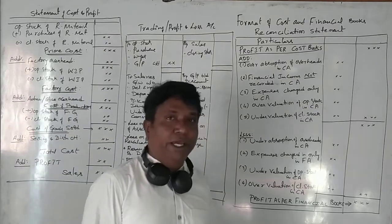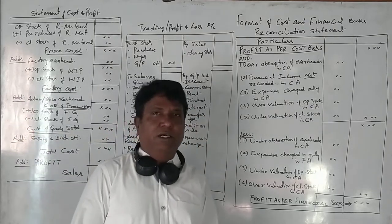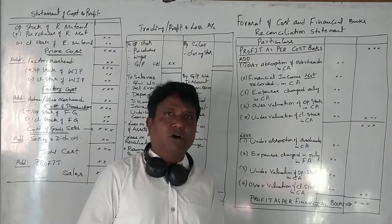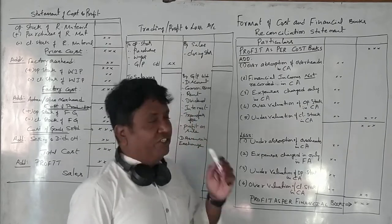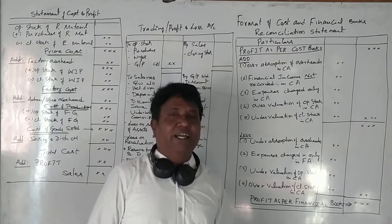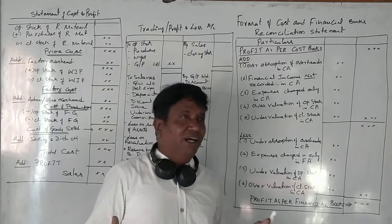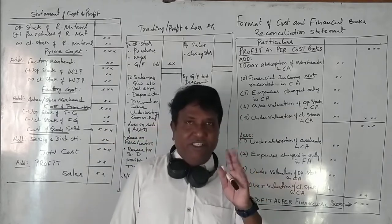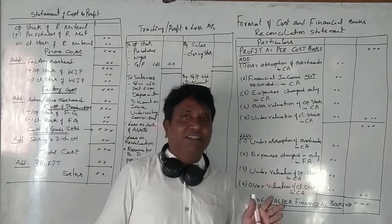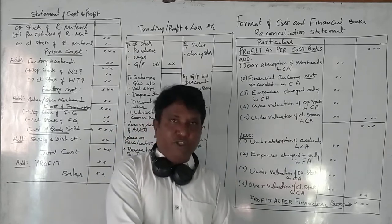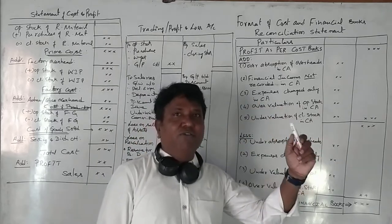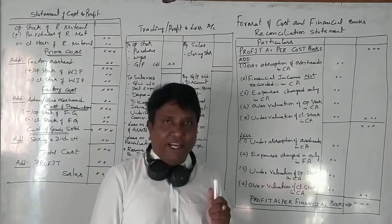Hello students, today we are going to discuss a chapter in cost accounting called the reconciliation statement. It is the cost and financial books reconciliation statement. The learning objective for us in this chapter is to prepare a reconciliation statement of cost profit to financial profit.